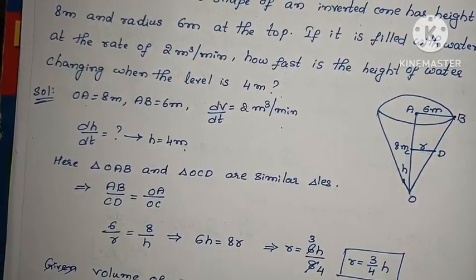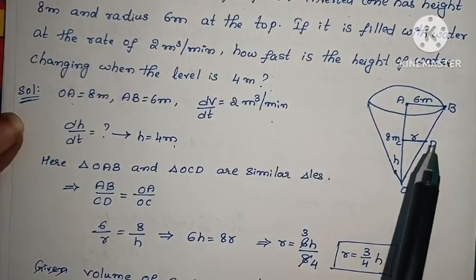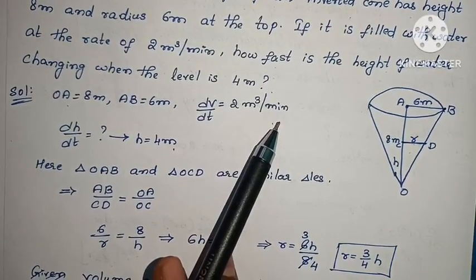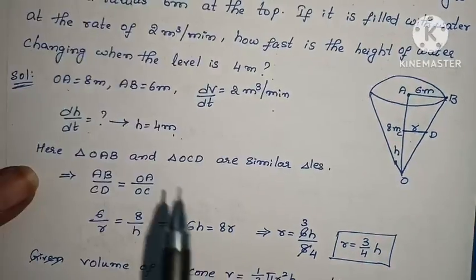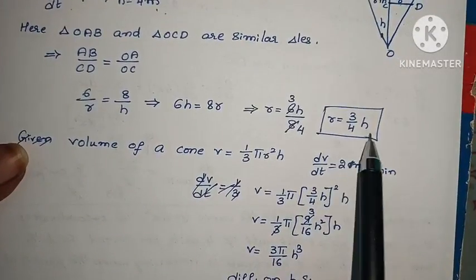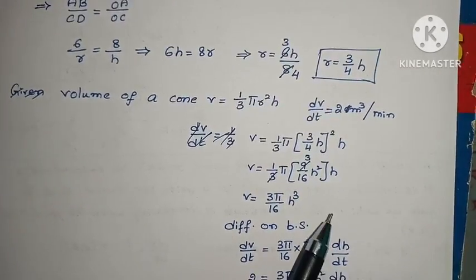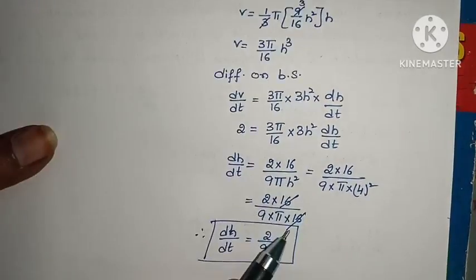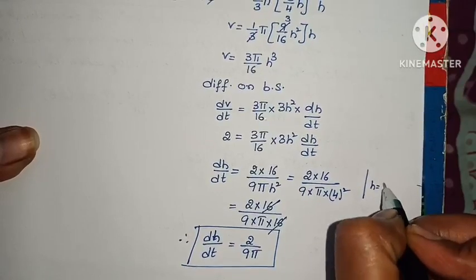This is very easy. The total height of the cone is 8m, radius is 6m. We fill with water at dV/dt ratio of 2 m³ per minute. Height is changing dH/dt when H equals 4m. These two similar triangles: AB by CD equals OA by OC. Substitute values to get R to H relation. Volume of cone formula is 1/3 π R² H. R equals 3/4 H, substitute. Then dH/dt by differentiating both sides. We get dH/dt at H equals 4m.